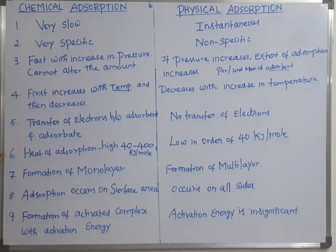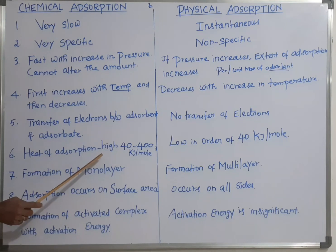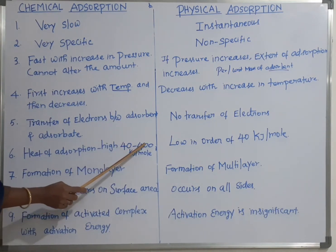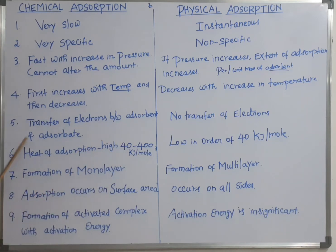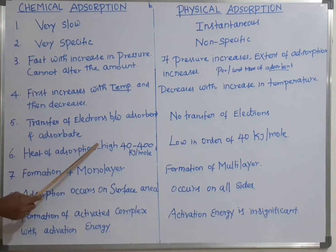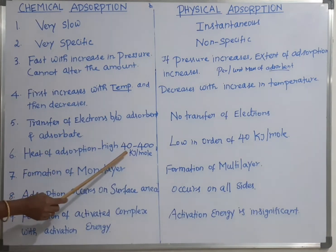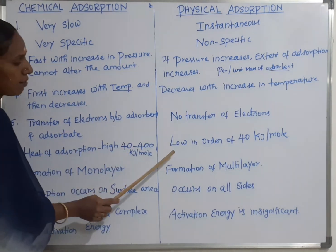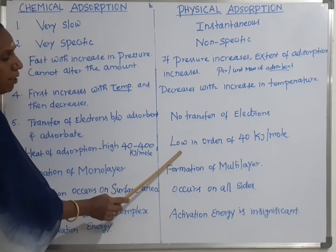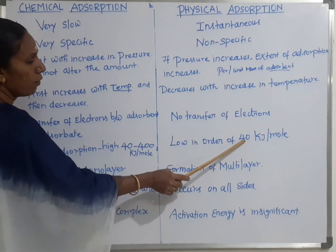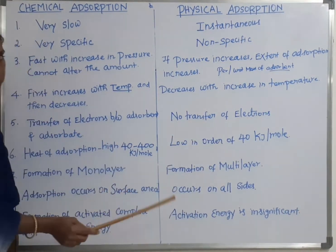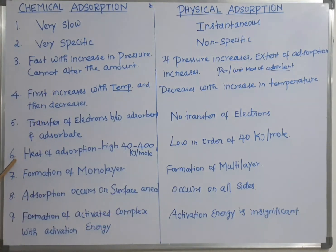Sixth difference: the heat of adsorption is higher in chemical adsorption — it is around 400 kJ per mole. But in physical adsorption, it is lower — around 40 kJ per mole.